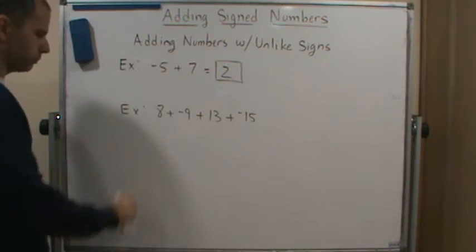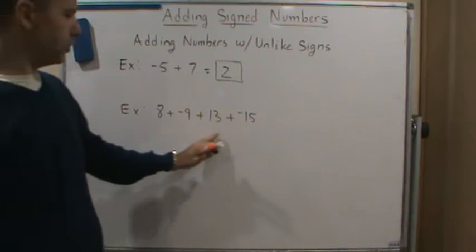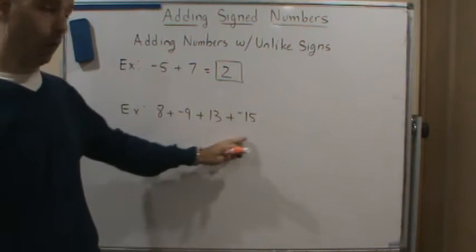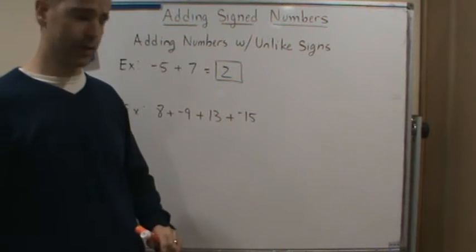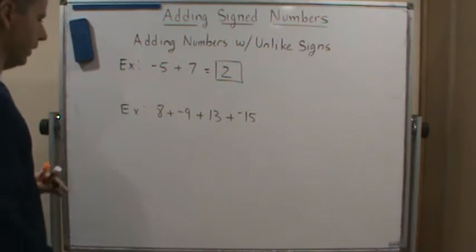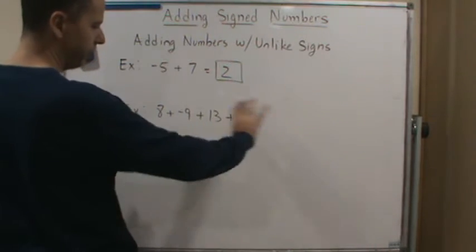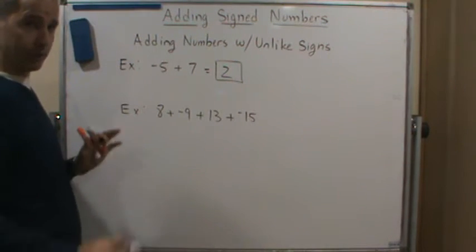So now what about this one? And again, we're going to do this pairwise, right? Because this is a binary operation. Addition is a binary operation. So we're going to have to do this pairwise. So again, you can do it left to right.